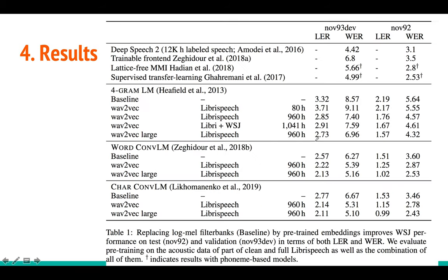Coming to the results, they compare WER for test data of WSJ. For both validation and test sets, these are previous systems where LER and WER are compared. DeepSpeech 2 achieved 4.42 WER but used a huge amount of labeled data that researchers might not be able to collect. It's reasonable that it looks best because of that data. Their result achieves WER of 3.1. They compare with different language models: 4-gram, word-based CNN LM, and character-based LM.